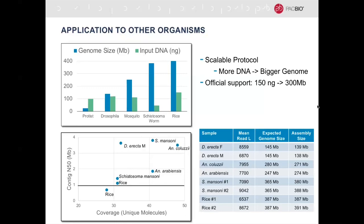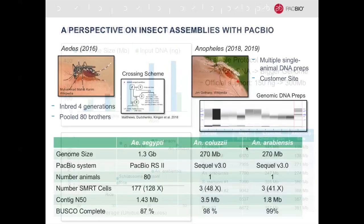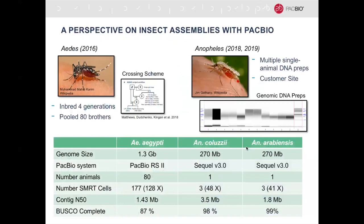In terms of assembly, we use standard Falcon assembly methods. Across all samples, we get contig N50s greater than one megabase when we have more than 30-fold unique molecular coverage. The main drivers for assembly quality are coverage — needing more than 30-fold — and read length. Looking at two Drosophila samples, the female had 8.5 KB average read length while the male had just under 7 KB, and the contiguity on these two samples was dramatically different.